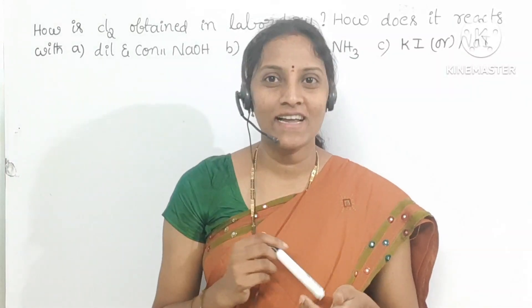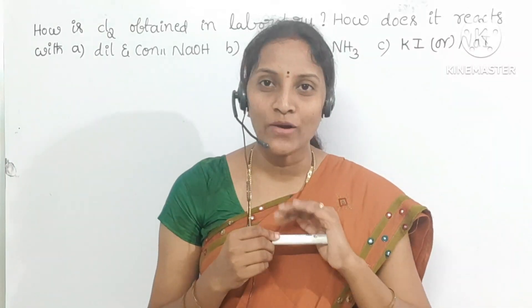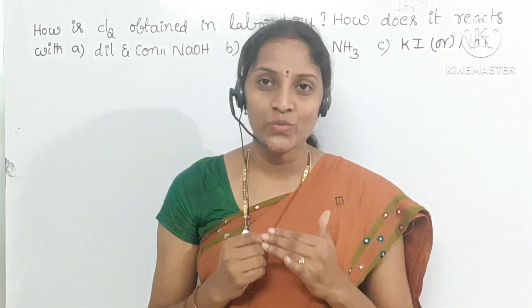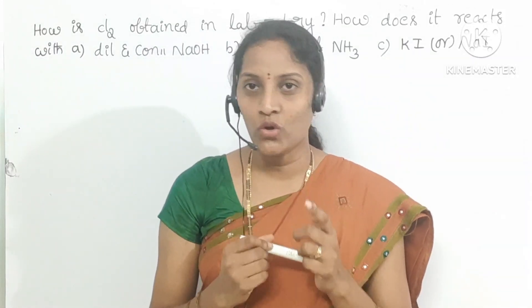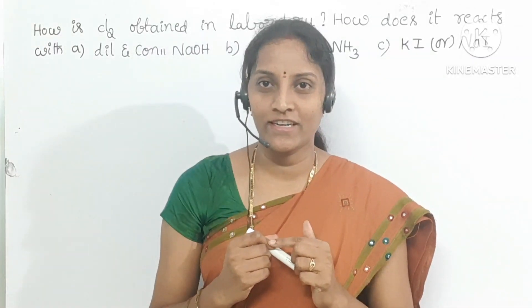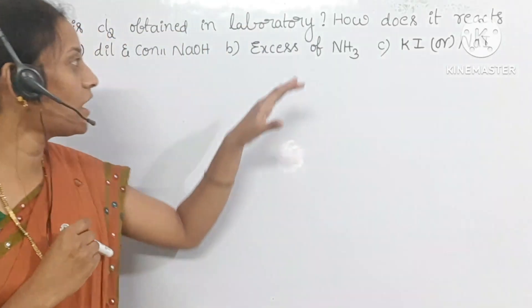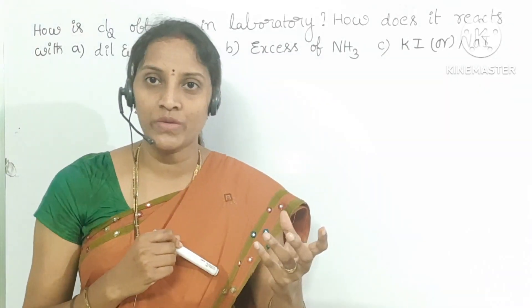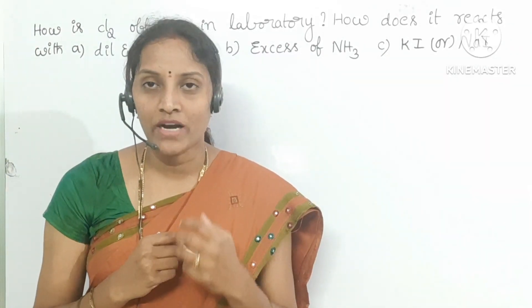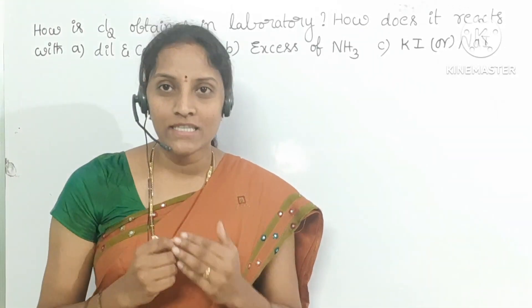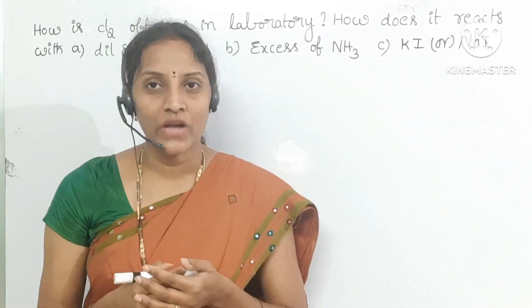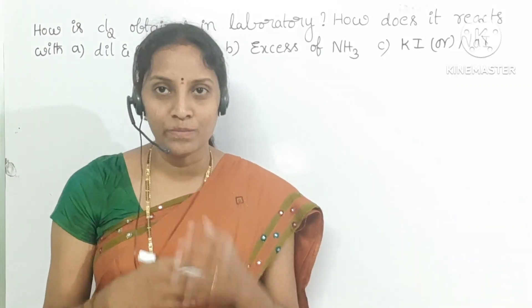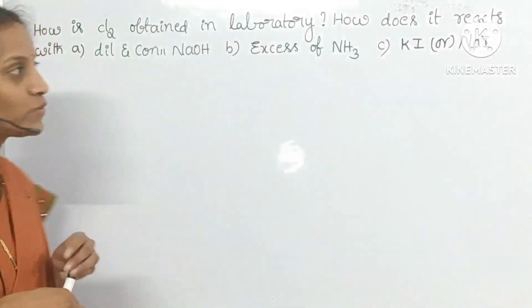Hi students. In today's class I am going to explain about how chlorine is obtained in the laboratory process, how it reacts with diluted cold NaOH, hot and concentrated NaOH, excess of ammonia, and potassium iodide or sodium iodide. This is the most important question for IP exams, so try to learn. I am going to explain in a simple way.